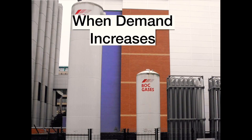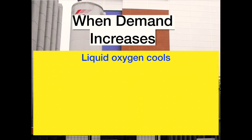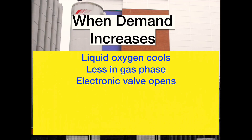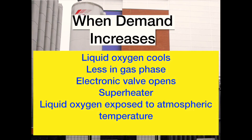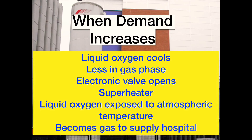If demand goes up, an increase in vaporisation of large quantities of oxygen keeps it in the liquid phase, which reduces the supply to the hospital. In this event, an electronically controlled valve allows liquid oxygen to enter an evaporator coil called the superheater. This exposes the liquid oxygen to atmospheric temperature, causing vaporisation of the oxygen to the useful gaseous form. The oxygen can then be pumped to hospital supplies via pipeline at a pressure of 400 kilopascals.